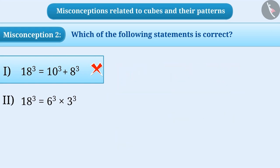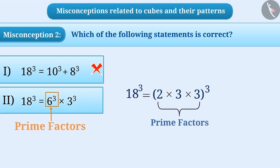Some children think that a number can only be expressed as a cube of its prime factors. In option 2, 6 is not a prime factor. This can also be a reason that children think that the second statement is wrong and the first statement is correct. But this is a misunderstanding. That's why they feel the second option is wrong.